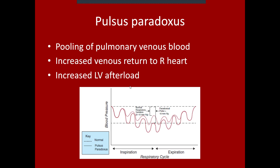This is what it looks like on the arterial waveform. You have normal respiratory variation, which is less than 10 mmHg, but in certain disease processes you have an exaggerated respiratory variation. Any time that variation is more than 10 mmHg, we call that pulsus paradoxus.